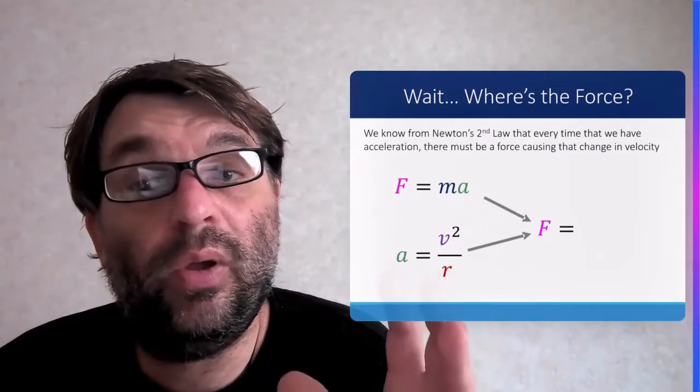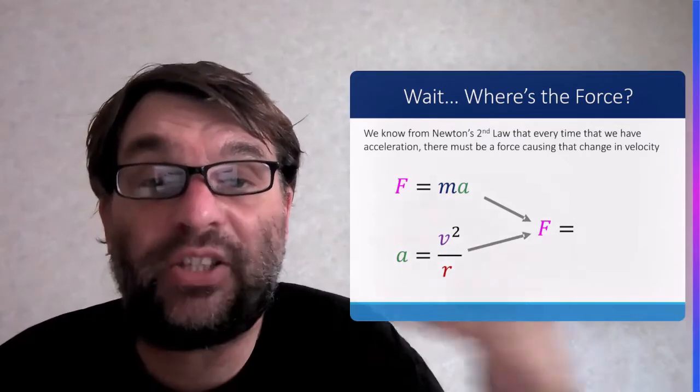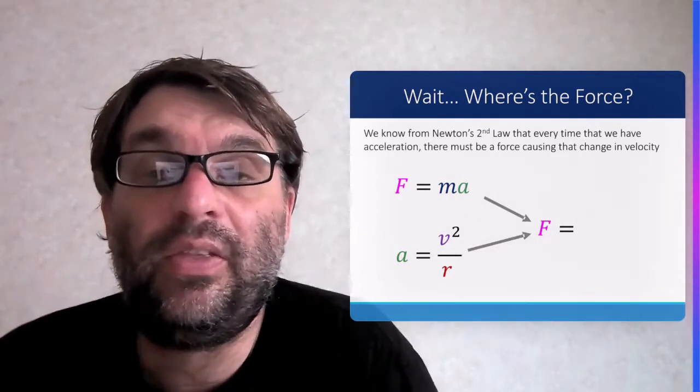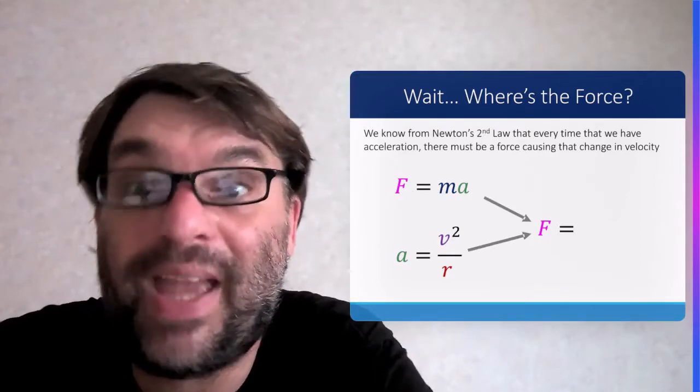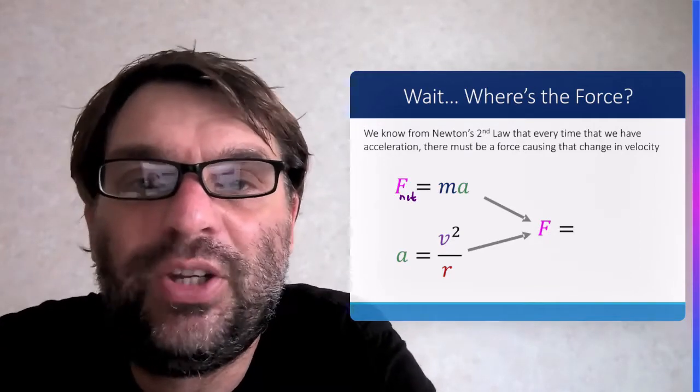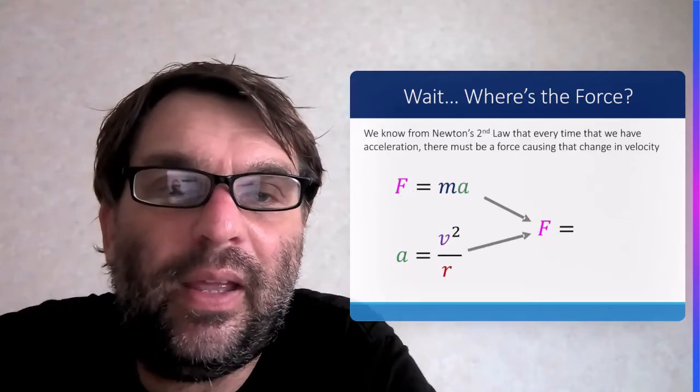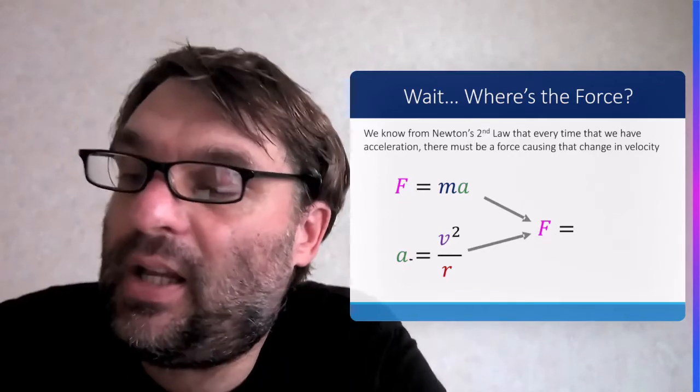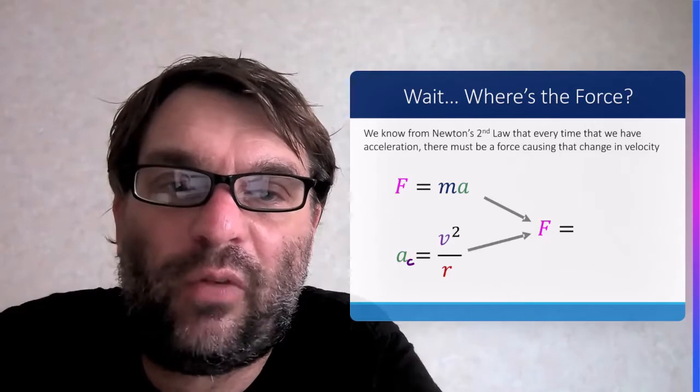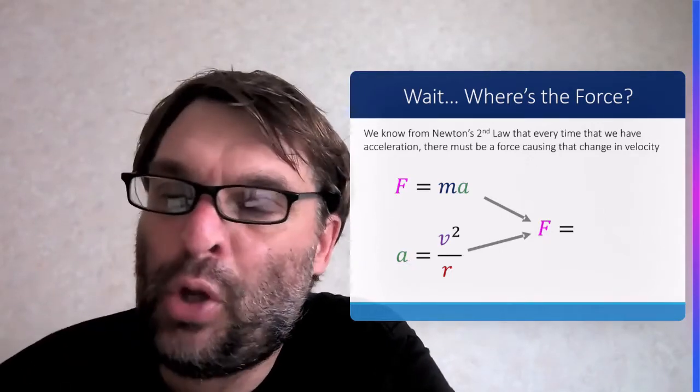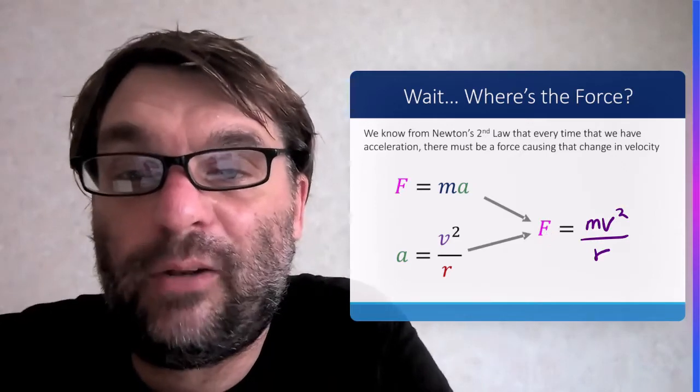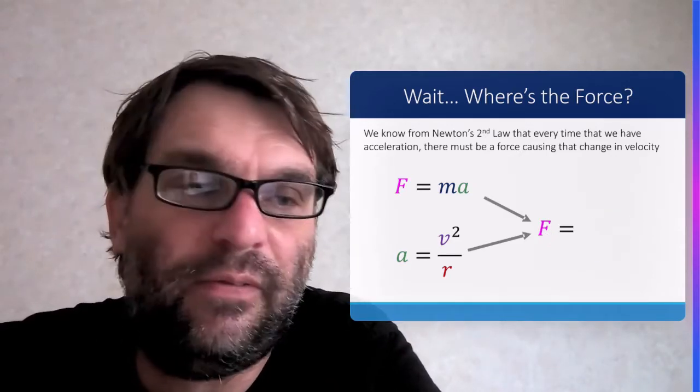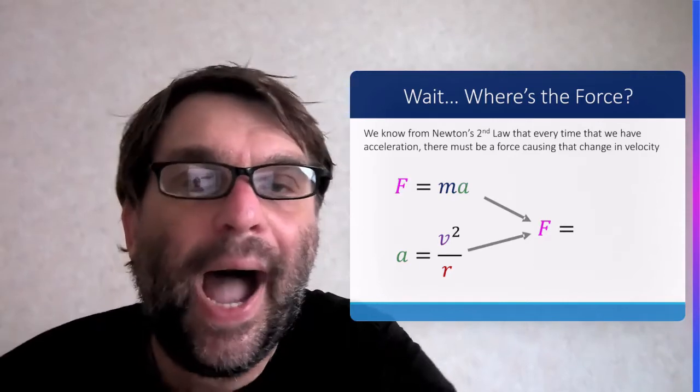So that means because there's an acceleration, there is a mass, there will be a force. So we know by Newton's second law, force equals mass times acceleration, that should be kind of drilled into you now. And the acceleration, at least centripetal acceleration, will equal v² over r, then you can add those two equations together to give the equation for the centripetal force, which will be mv² divided by r.